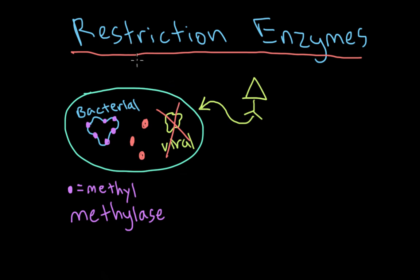The reason this is called a restriction enzyme is because researchers noticed that certain bacteria were resistant to viral infection — they were basically restricting viral growth. When they figured out which enzyme was responsible, they called it a restriction enzyme because it restricted the growth of viruses.